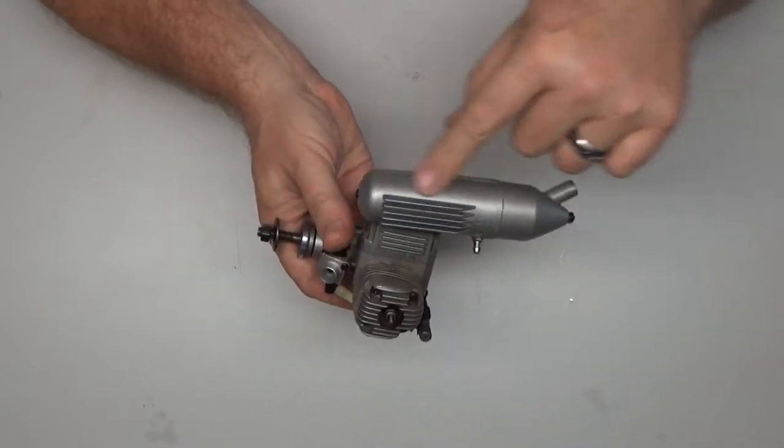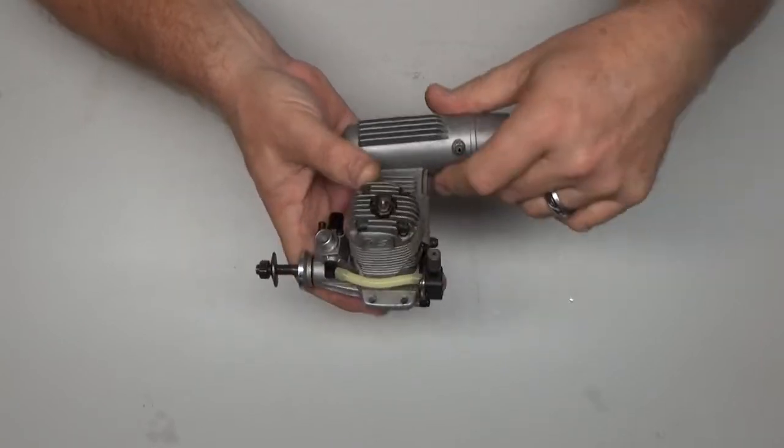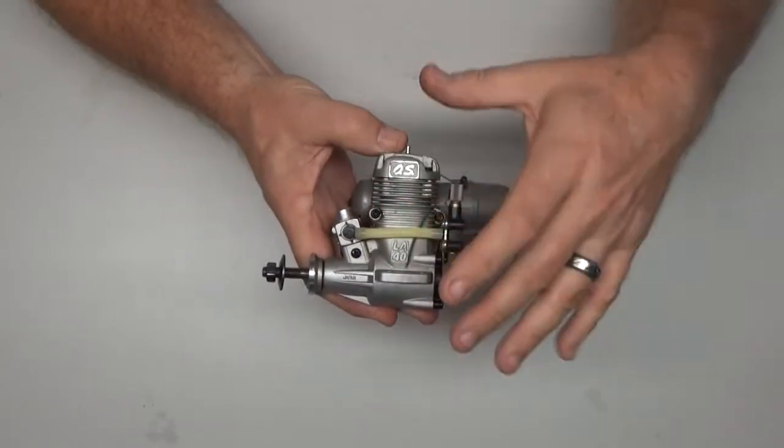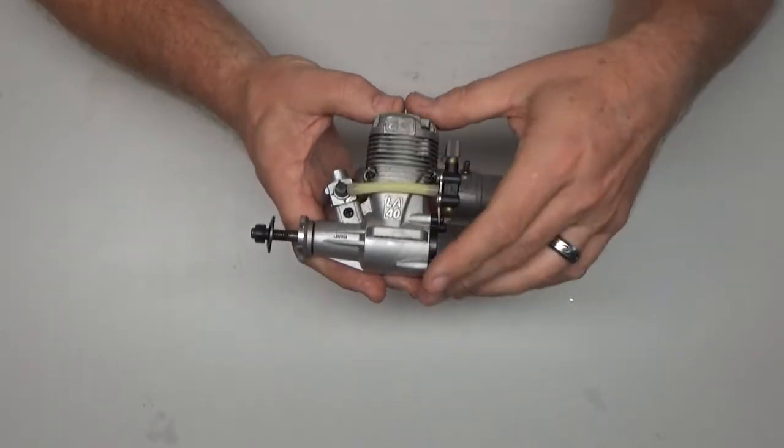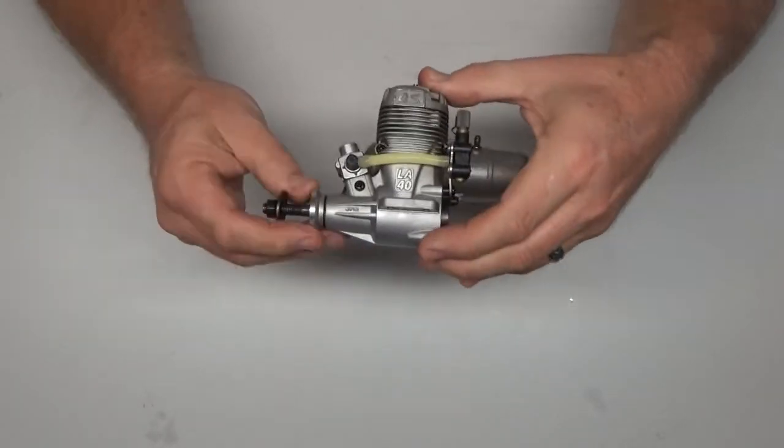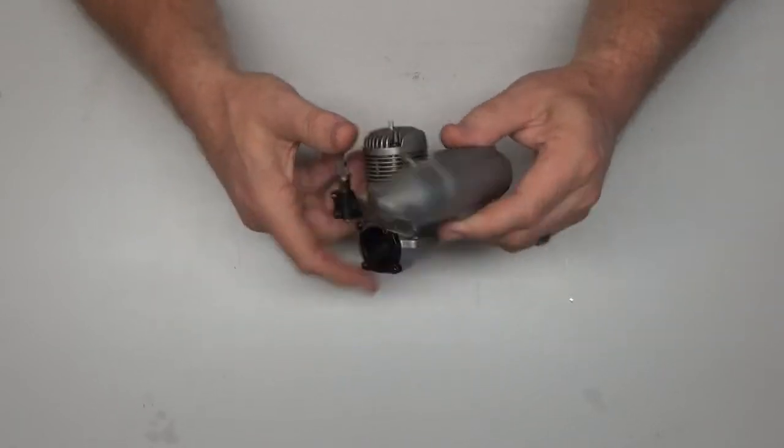Later on in the production they decided they'd make them all silver again in addition to selling the blue ones. I've just never been a real fan of the LA, I've never had one on a plane. I'm sure they're fine engines for being a plane bearing engine.